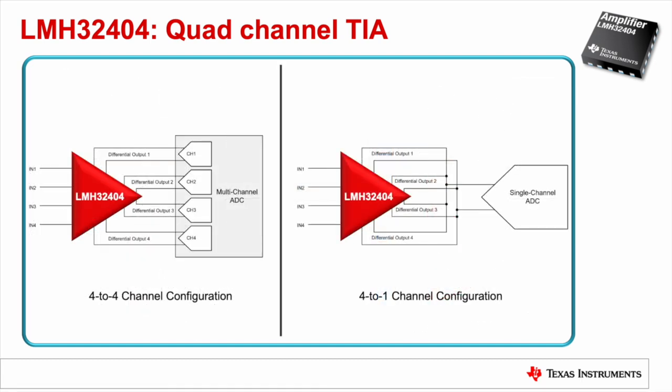The unique structure of the independent output switch control of the LMH32404 enables even further system flexibility. This diagram shows the device in a 4-to-4 configuration on the left and a 4-to-1 configuration on the right. In the 4-to-4 configuration, each input corresponds to a differential output, enabling data capture simultaneously for each of the four channels. In the 4-to-1 configuration, the LMH32404 internally multiplexes all four differential outputs into a single differential output, which significantly increases the channel density for systems that do not need to use all the inputs simultaneously.